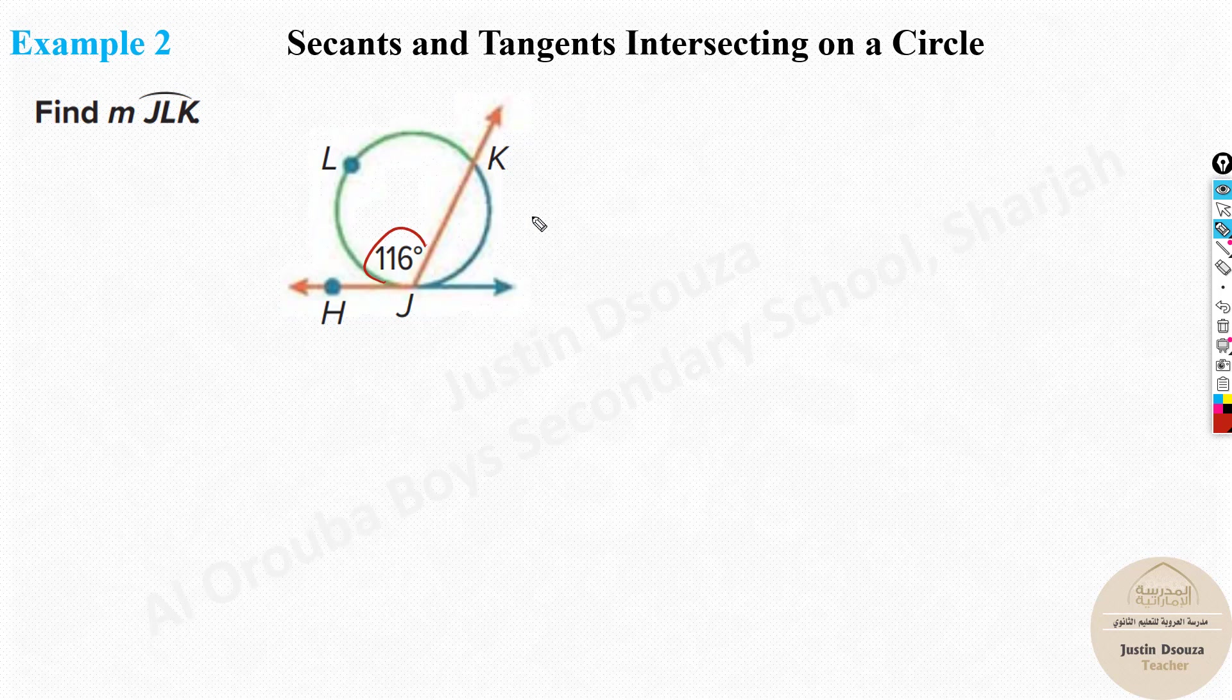We know that this angle, so I'll write measure of angle J will be equal to half of the arc JLK. Okay, this is the arc. Now, we know this formula, but we know J already, that is 116 degrees. And this is half into, what is JLK? That is what we need to find, the arc JLK there. I mentioned it over here. So take the 2 to the other side, it will be 116 times 2. That is equal to JLK.